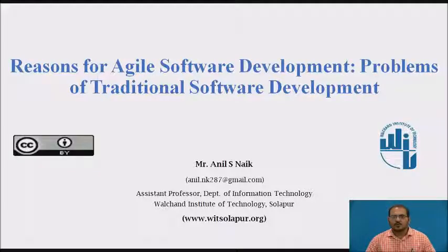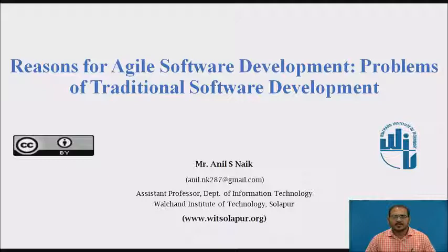Hello, welcome to the session on the reason for moving to the agile model because of the problems of traditional software development methods such as waterfall model, the V model, and rational unified process model. In businesses today, these traditional methods are being replaced more and more by a modern process that is the agile method. We look at the reasons as to why traditional methods may no longer be applicable in modern businesses.